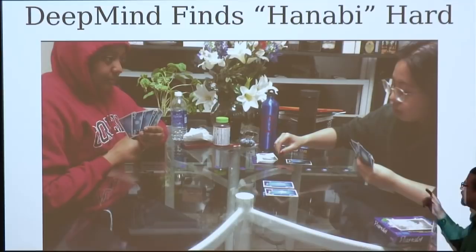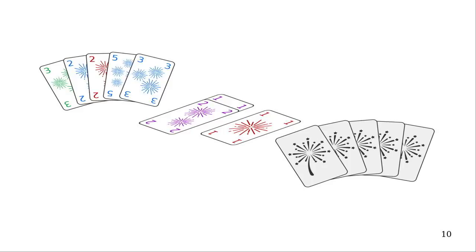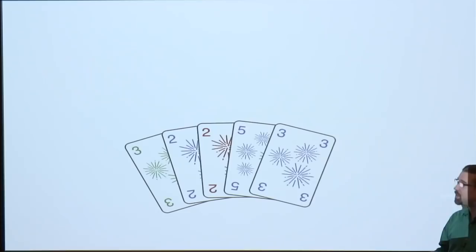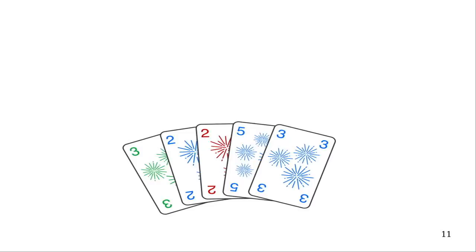The goal is to play cards down on the table according to a certain set of rules. Since you don't know what's in your hand, you have to give each other hints in order to know what to do. You can give hints either about color, in which case you must hint all cards of that color, or likewise number, you must hint all cards of that number. Those are the only kind of hints, the only kind of information that you can give to your partner to help them understand what to do.